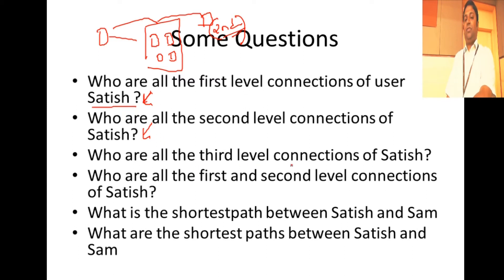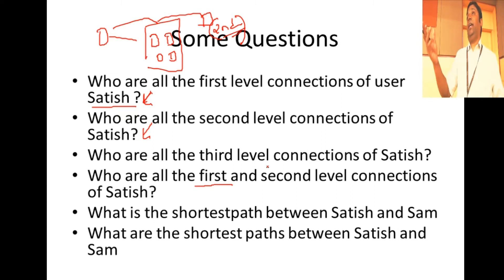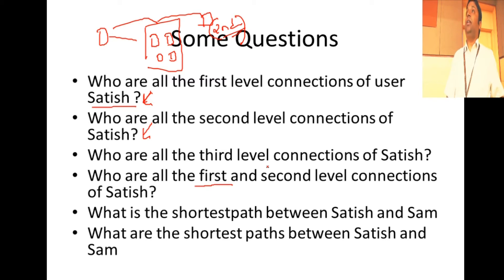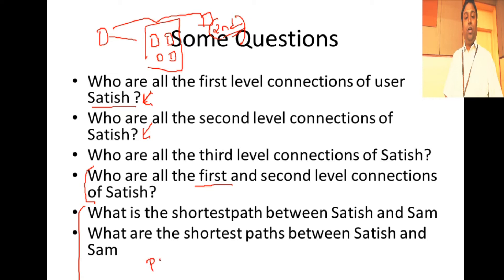The third level connections of Satish work similarly to second level. We can also run queries to find all first as well as second level connections of Satish, or all first as well as third level connections of Satish. I will be revisiting these two queries in the graph analytics class on Thursday. Today's focus is purely on path finding.